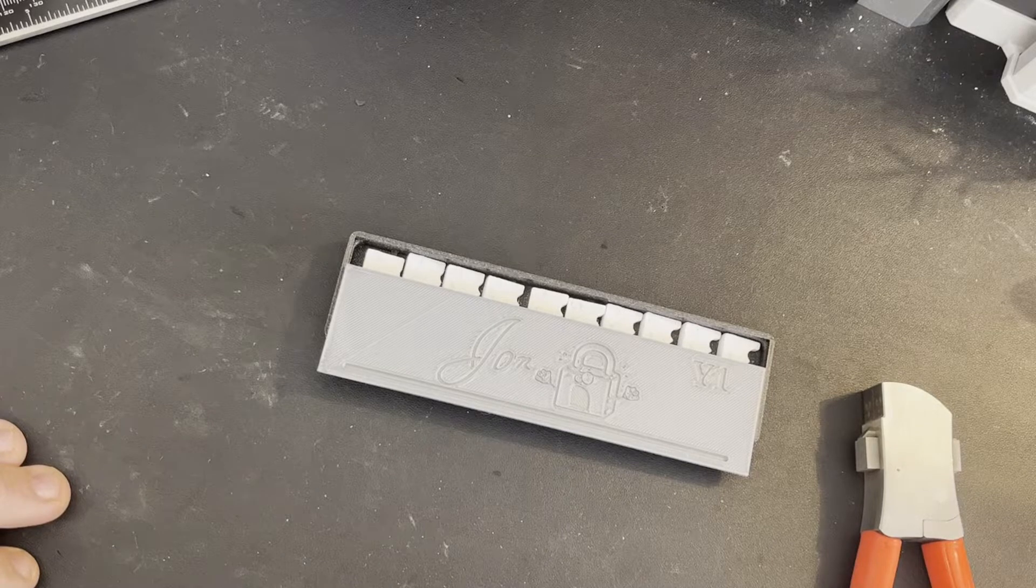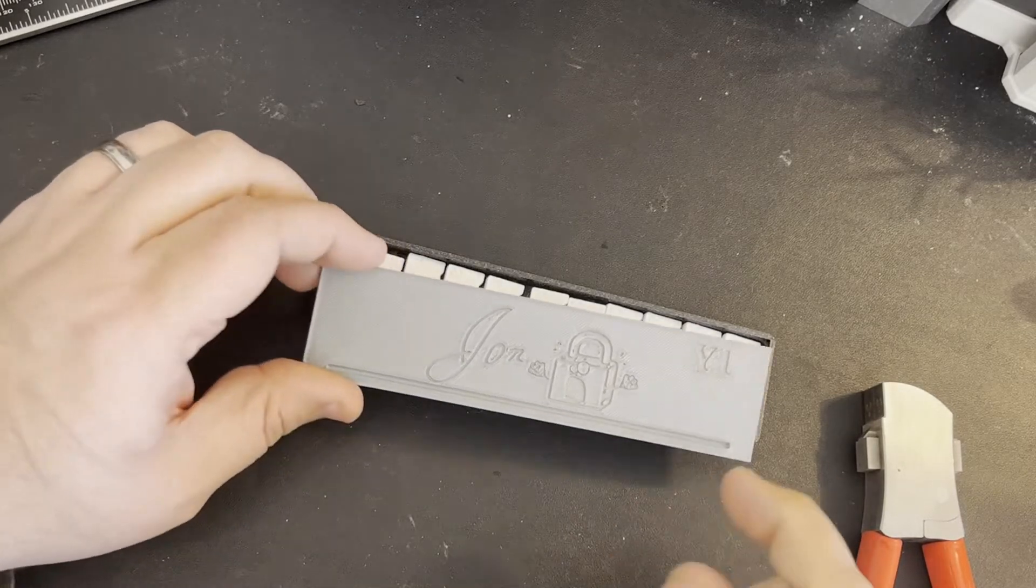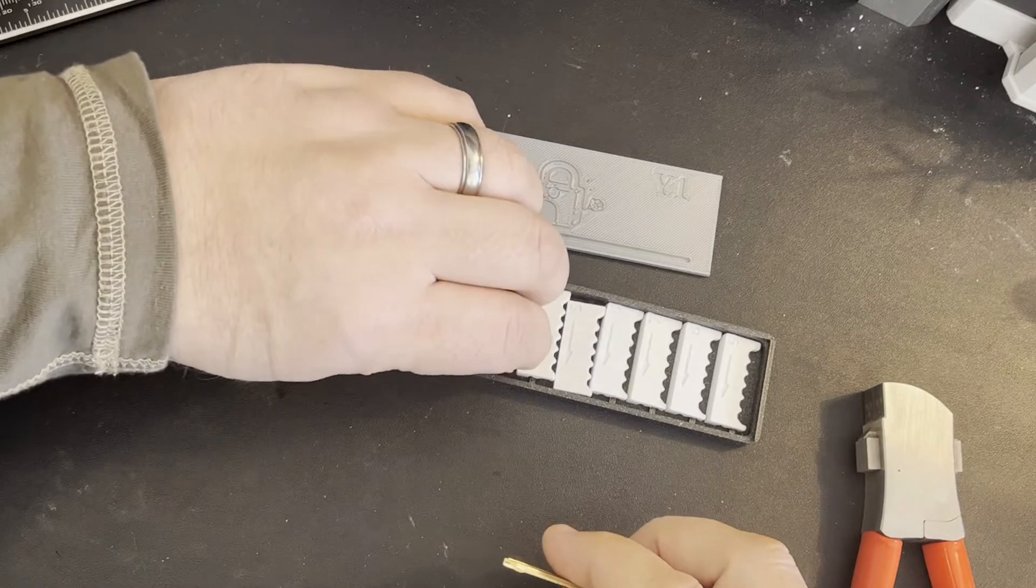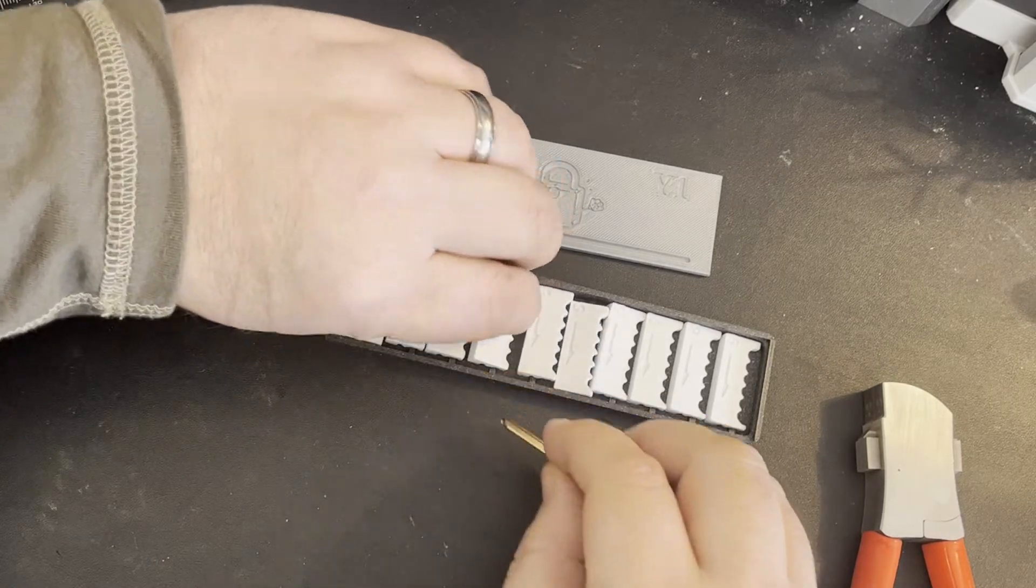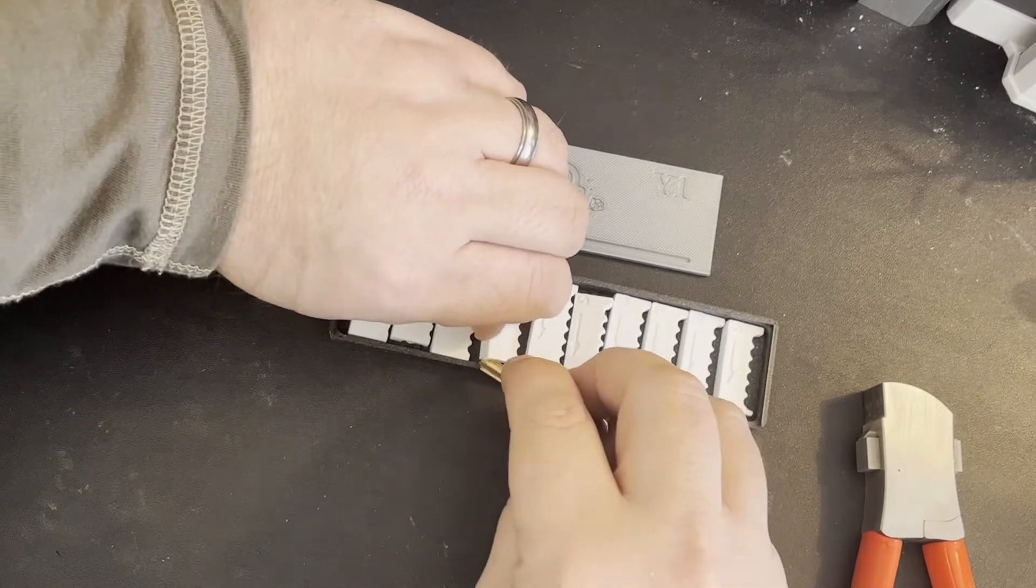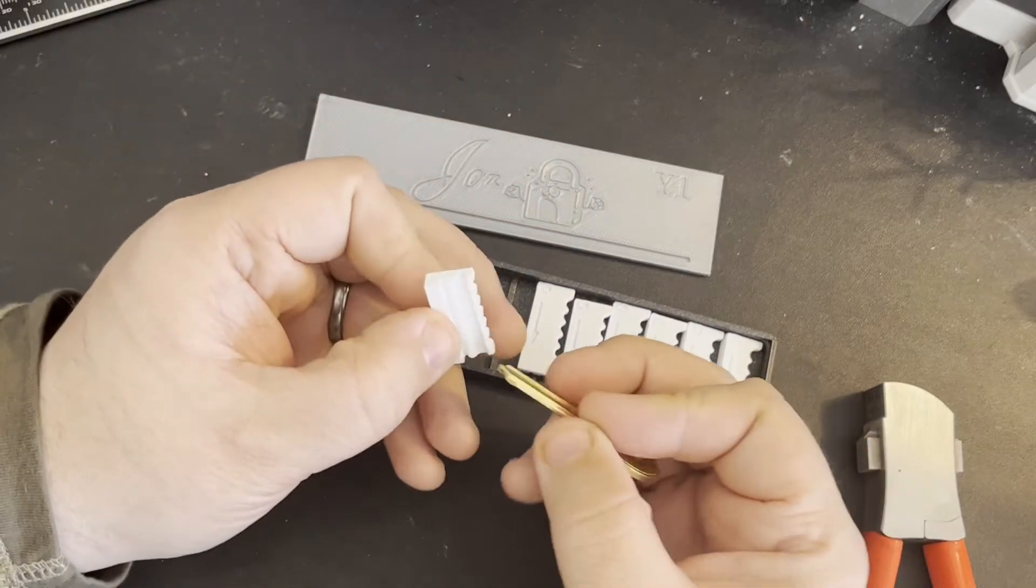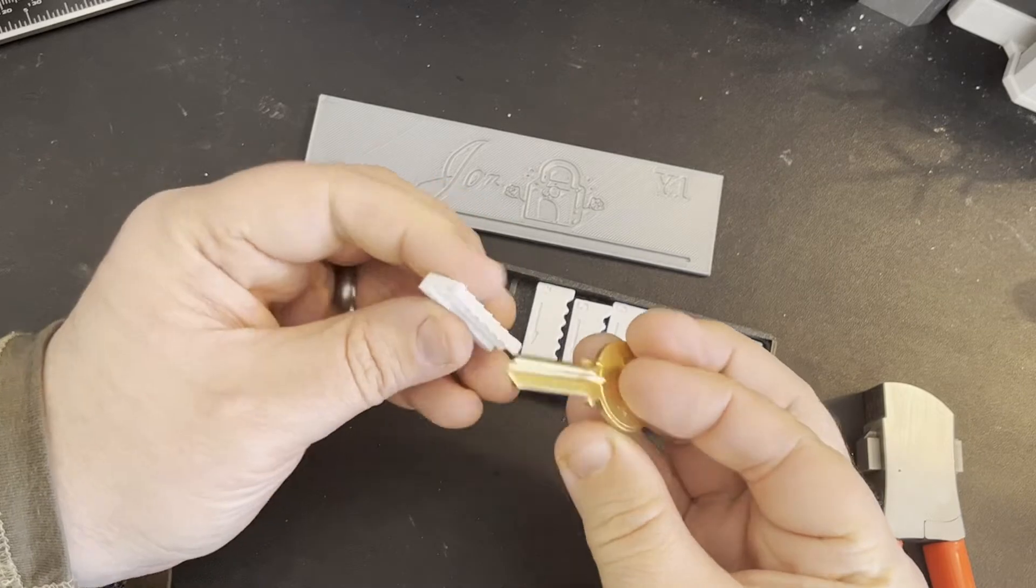Hey everybody, John Locke here, and these are my Yale one Lishi cutter jigs, version 1.1. Bad news is that they are not going to work. Let me show you what I've got here.